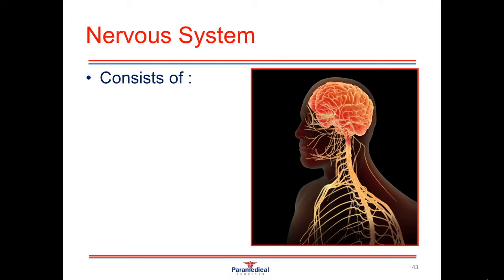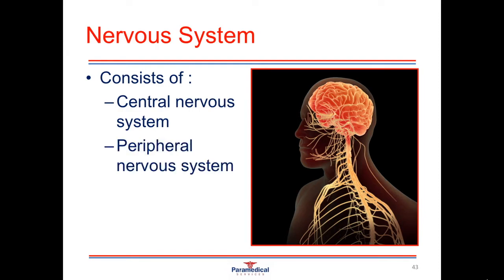The nervous system comprises two main divisions. One is called the central nervous system, and the other is the peripheral nervous system.